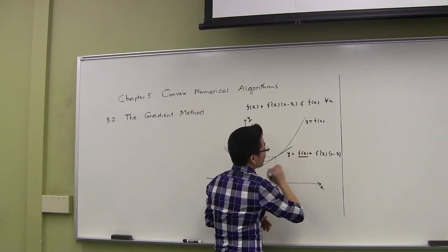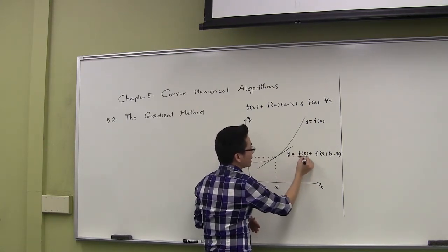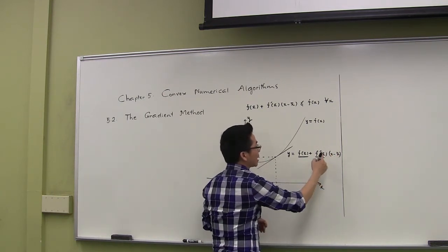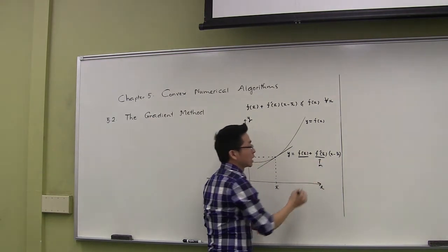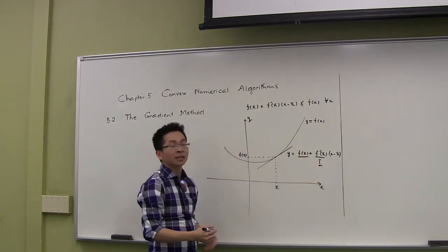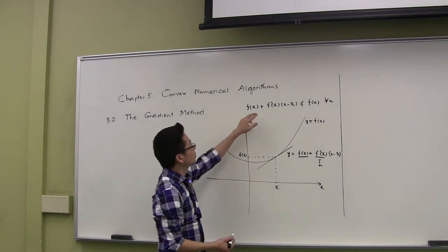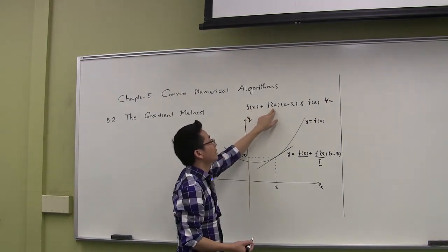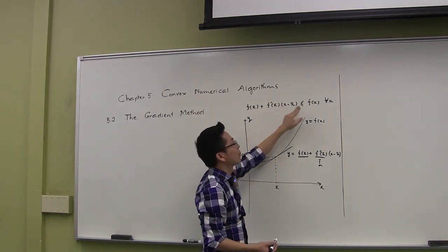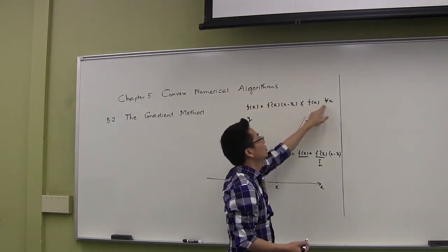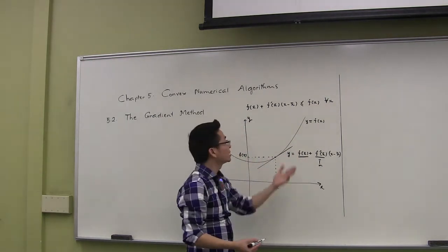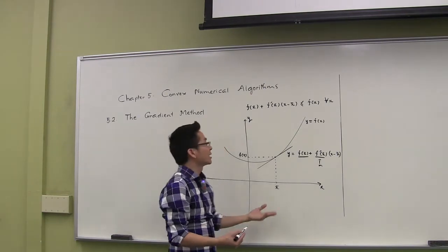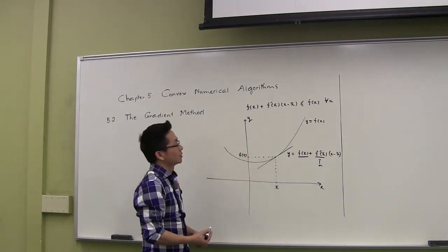The equation of this tangent line is y = f(x-bar) + f'(x-bar) times (x minus x-bar), where f'(x-bar) is the slope. Therefore we always have the inequality: f(x-bar) + f'(x-bar)(x minus x-bar) is always less than or equal to f(x) for all x in R. This result works in higher dimensions as well, so let me state the related result.